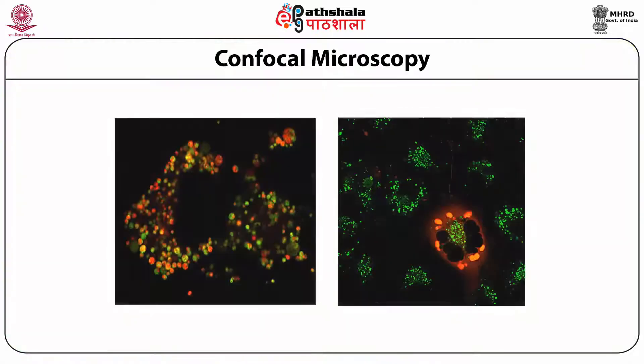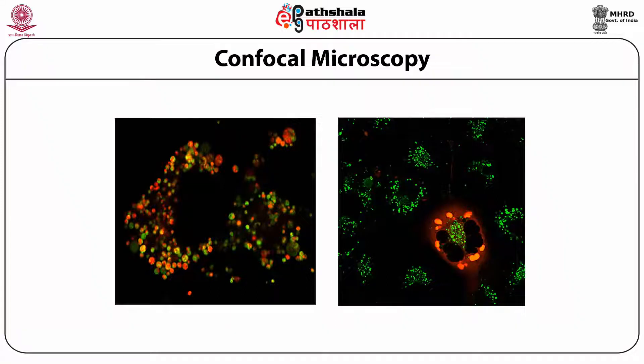Confocal microscopy can also be used to identify interactions between proteins. It is good for detecting intracellular co-localization of proteins, and a point-scan laser system minimizes overlap in images, making it perfect for imaging co-localization of proteins. Using confocal microscopy, we can more accurately understand the interaction between protein-protein molecules.